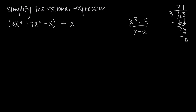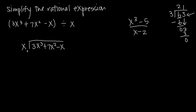This is going to be a really similar concept, except with polynomials. We take the numerator, our first polynomial, and make it the dividend — we put it inside the division bracket. So we write 3x cubed plus 7x squared minus x inside, and on the outside we have the divisor, which is x. Now we'll just take it one term at a time, just like we did with real numbers. We ask: how many times does x go into 3x cubed?